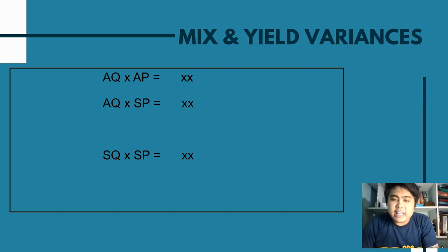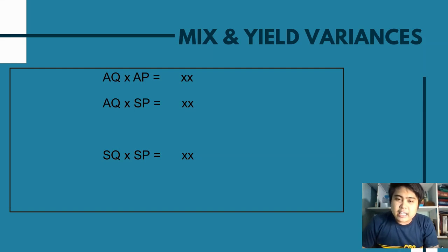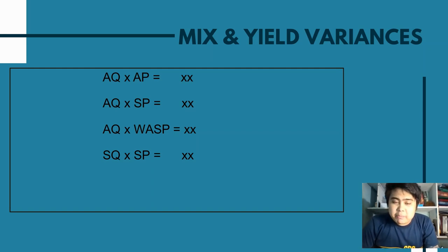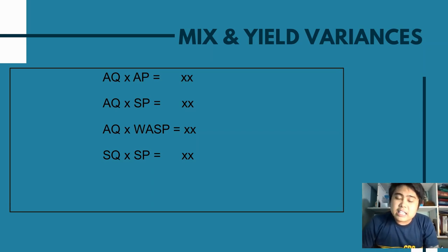If you look at this three-layer template for direct material variance, the difference between the first and second line is the direct material price variance, and the difference between the second and third line is your direct material quantity variance. So if our goal is to separate the direct material quantity variance into mix and yield variance, we add a middle layer. In variance analysis, the concept is always the same — if you want to separate a variance, you add a middle layer. AQ×AP is actual cost, SQ×SP is standard cost, and their difference is the total direct material variance.